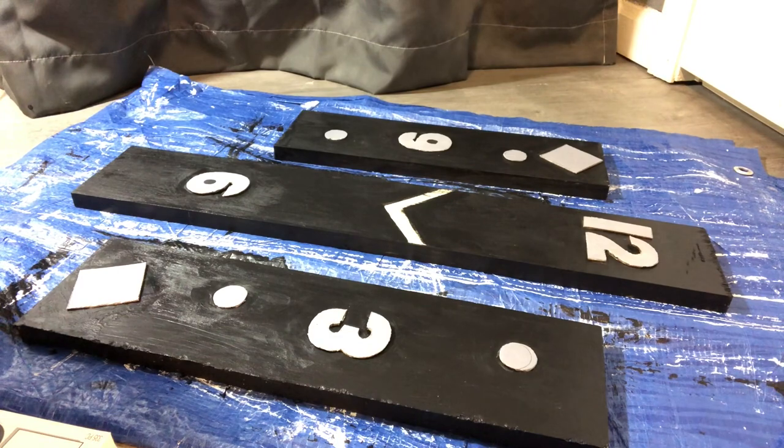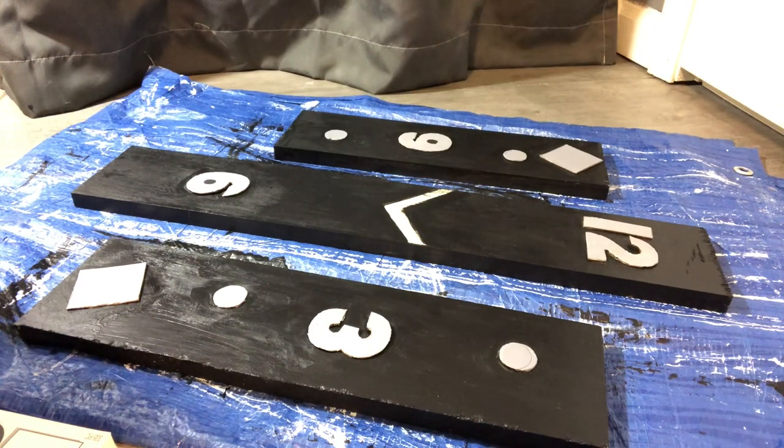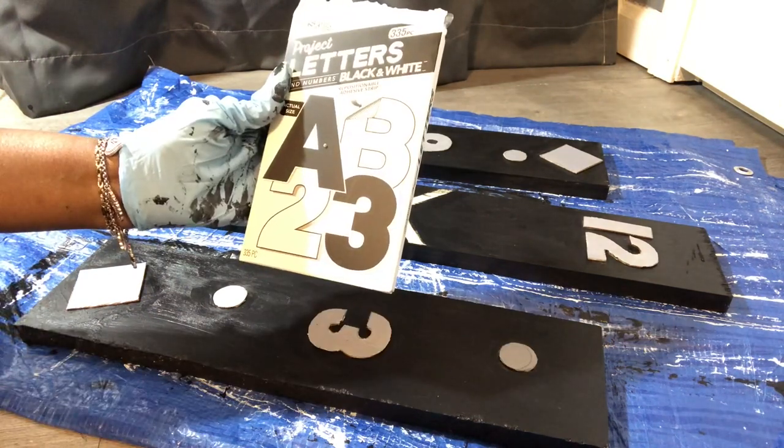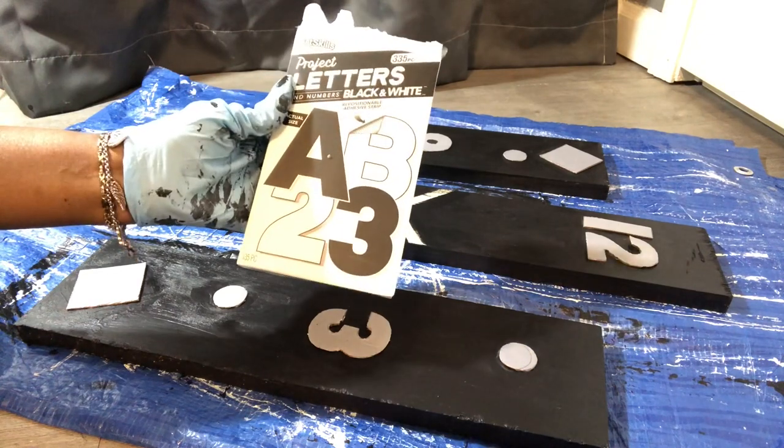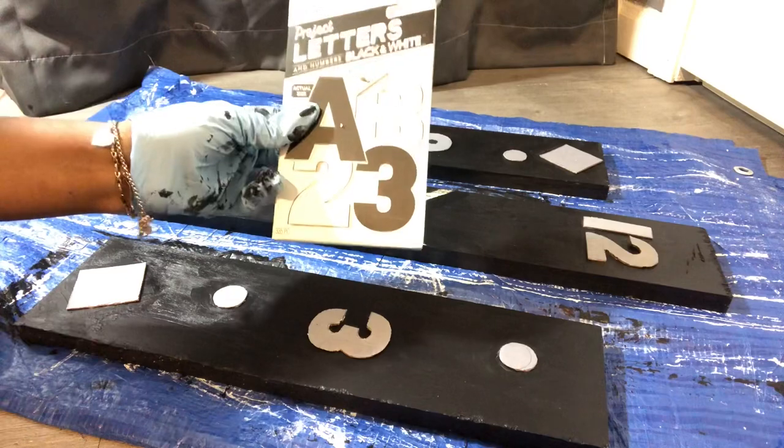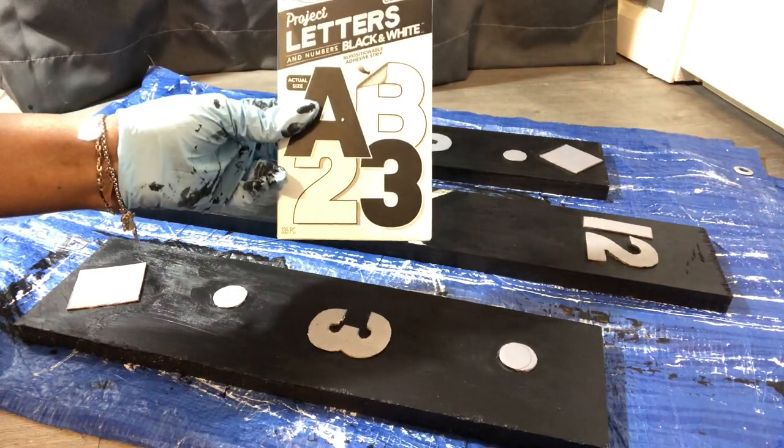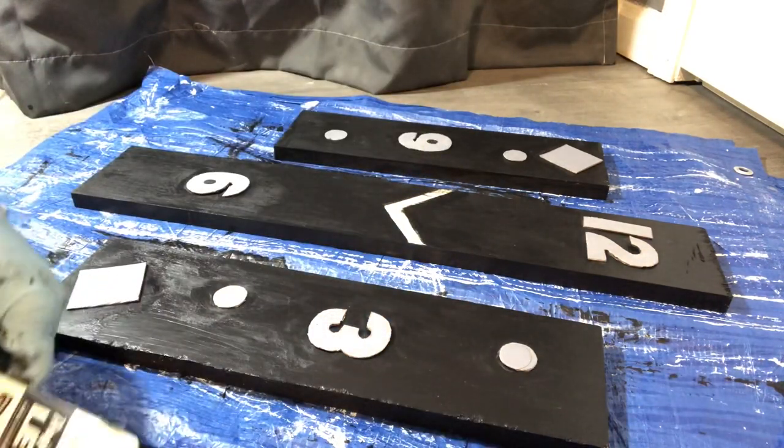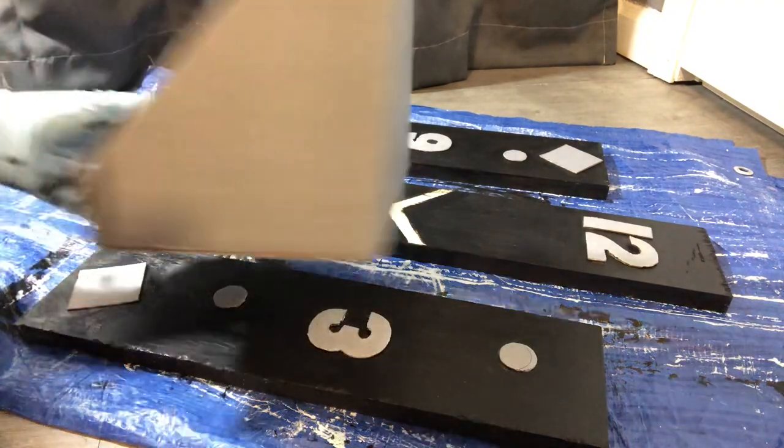Now that I've got my boards painted, I have gone ahead and placed my numbers on there. I use these numbers right here that I got from Walmart out of the school supply area. Because the numbers were like paper thin, I ended up tracing them on a cardboard box that I also got from Walmart.